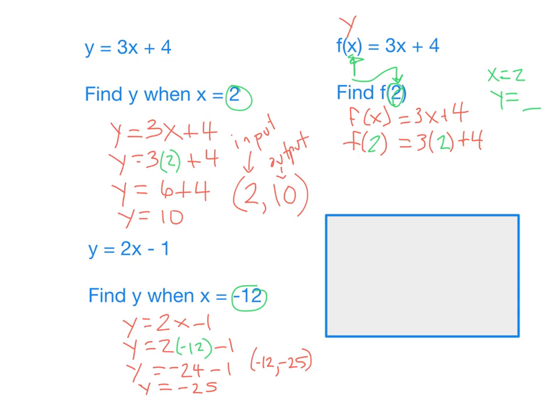That's going to stay f of 2 equals, and now we do our order of operations on the right-hand side. 3 times 2 is 6, and 6 plus 4 is 10. So, f of 2 equals 10. Again, this means that when 2 is our input, 10 is our output, and that's exactly what we got over here as well.